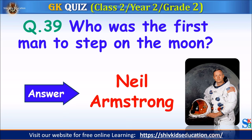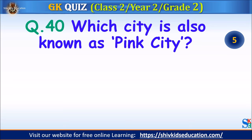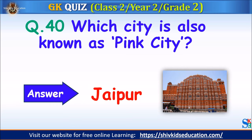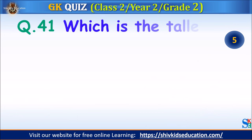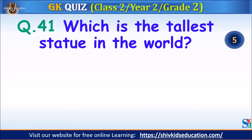Question 40: Which city is also known as the Pink City? Your time starts. The answer is Jaipur. Question 41: Which is the tallest statue in the world? Your time starts. The answer is the Statue of Unity — Sardar Vallabhbhai Patel statue in India.